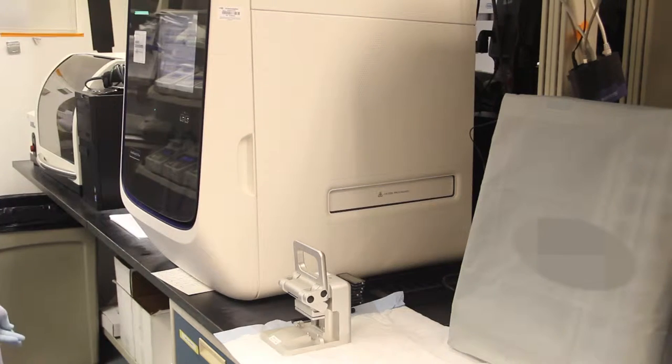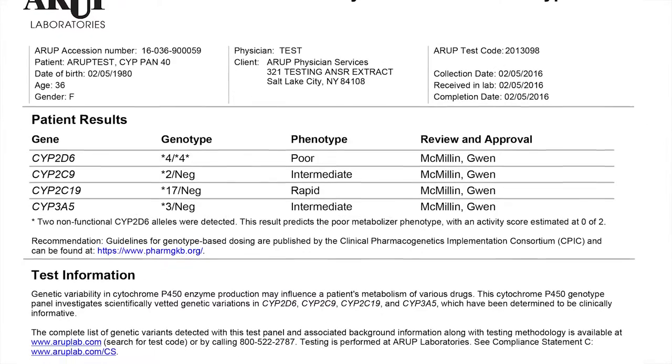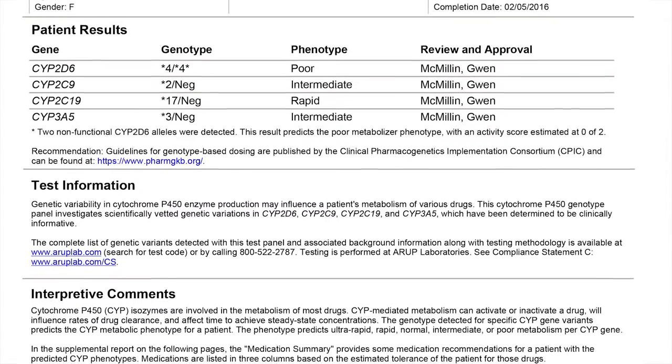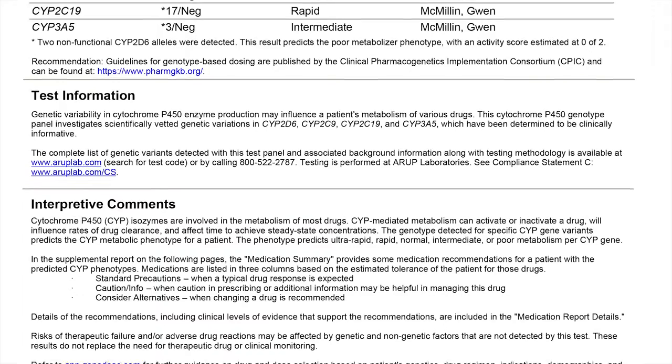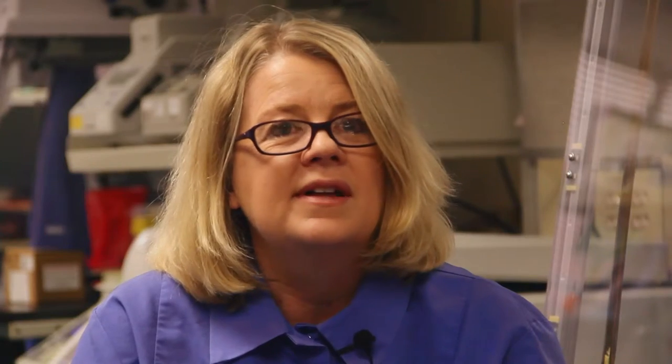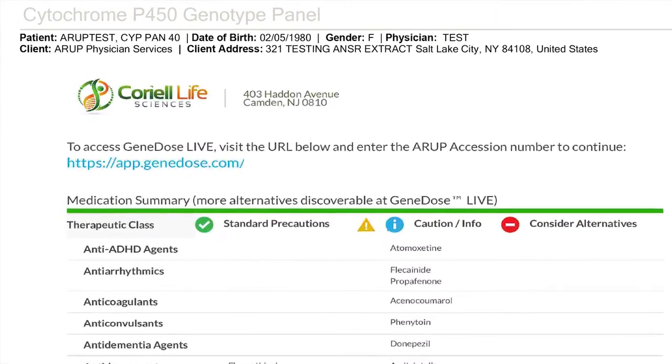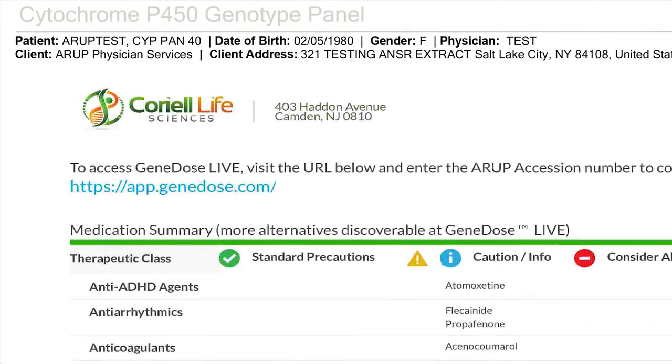One of the exciting things about our new CYP panel is that it comes with a comprehensive medication recommendation report. This report is a result of a relationship with Coriel Life Sciences, who has accumulated an extensive database of evidence-based research for pharmacogenetic testing and clinical implementation of those results.